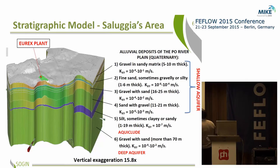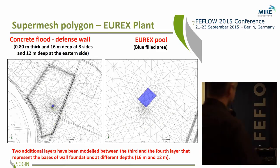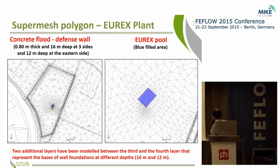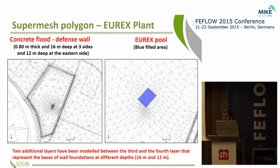For this first application, we modeled only the shallow aquifer. We introduced two different super mesh polygons: the first represents the concrete flood defense wall around the Aerox plant area, and the second represents the Aerox pool. We also added two additional layers to represent the base of the wall foundation at different depths, between the second and third geological layers.